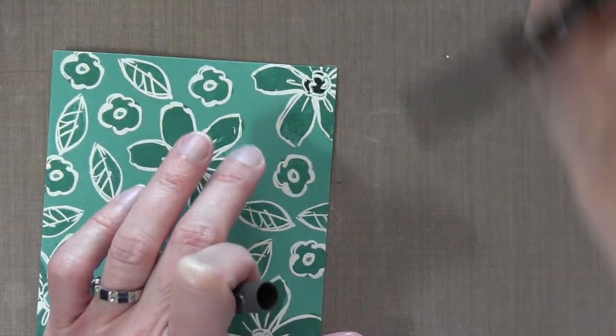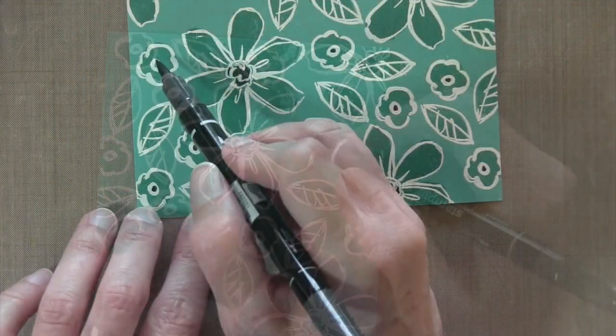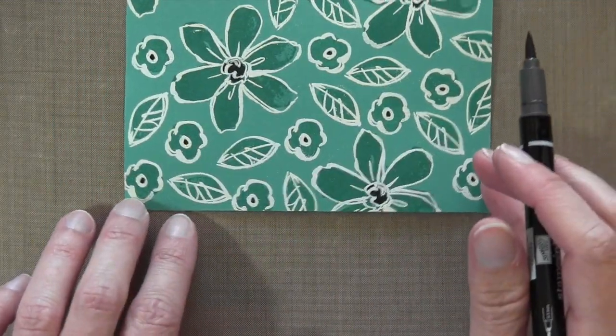I use Stampin' Up Black marker, and I'm trying to go around the embossing, because it will stain the embossing a little bit, but a tissue will help wipe up most of it.